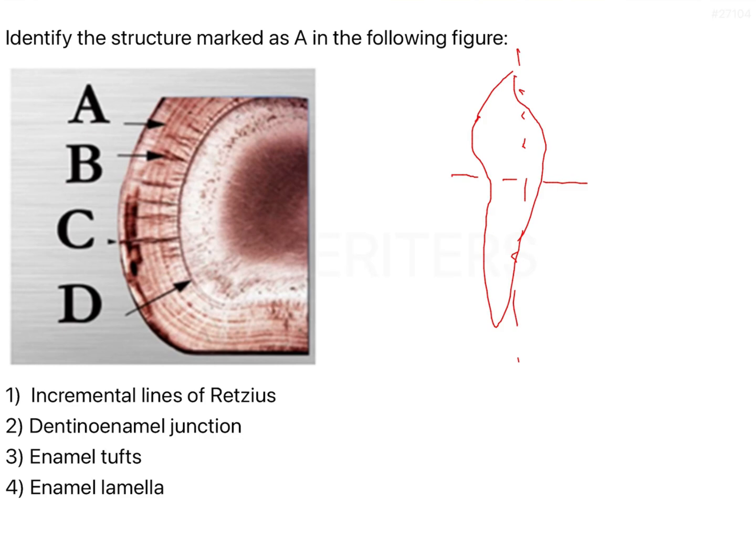As we know, enamel when it is being laid down is laid down in increments. That means it's not a continuous process where the whole enamel is laid down and calcified at once. Ameloblasts secrete the matrix, and once they secrete the matrix, it gets 30 percent calcified. After